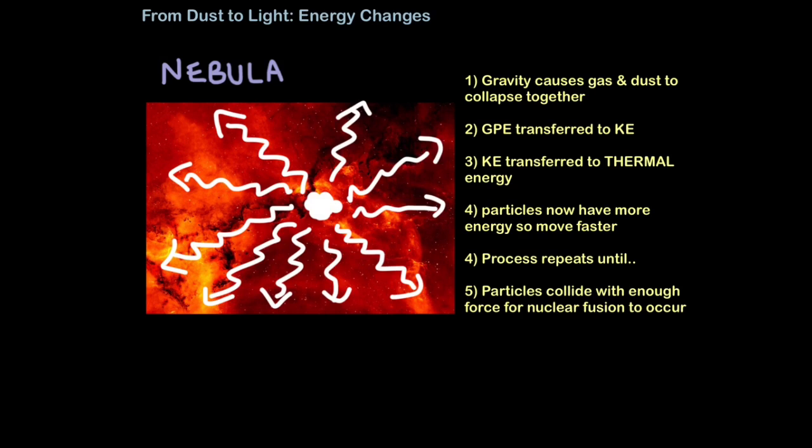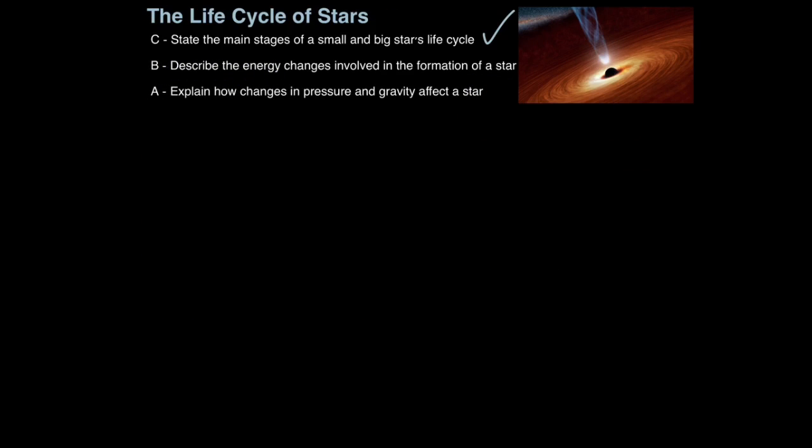At this point a star is born, or at least a protostar which will then evolve into a main sequence star. Just a quick recap: gravity causes gas and dust to collapse together. The gravitational potential energy is transferred to kinetic energy as these particles start to move towards each other. When they collide, the kinetic energy is transferred to thermal energy. Because these particles are now hotter, they have more energy to move faster. This process goes on until the particles collide with enough force for nuclear fusion to occur. At this point a star is born and it will start outputting the quantities of light and heat we normally associate with stars. That is how you describe the energy changes involved in the formation of a star.